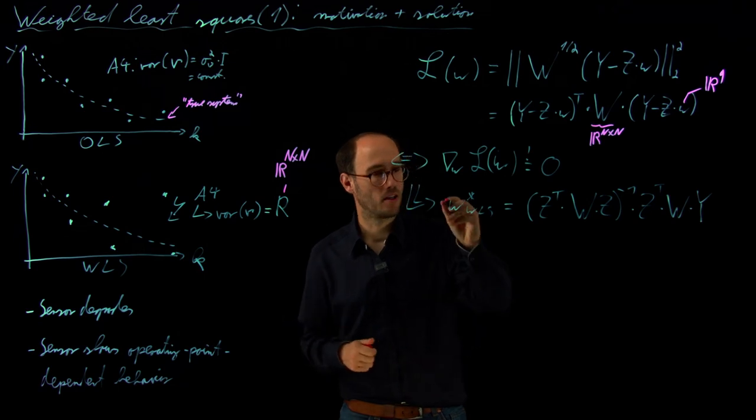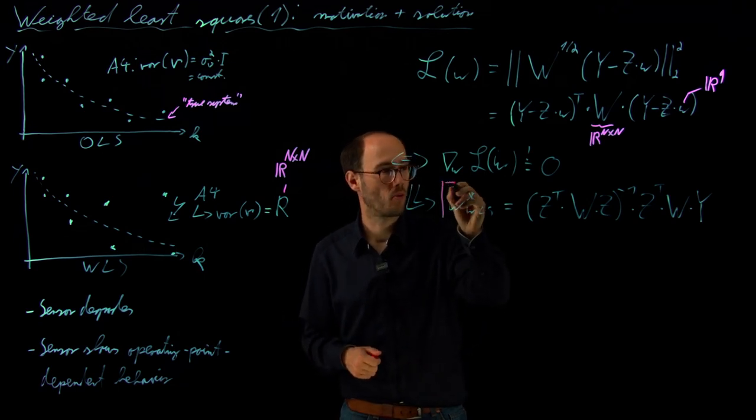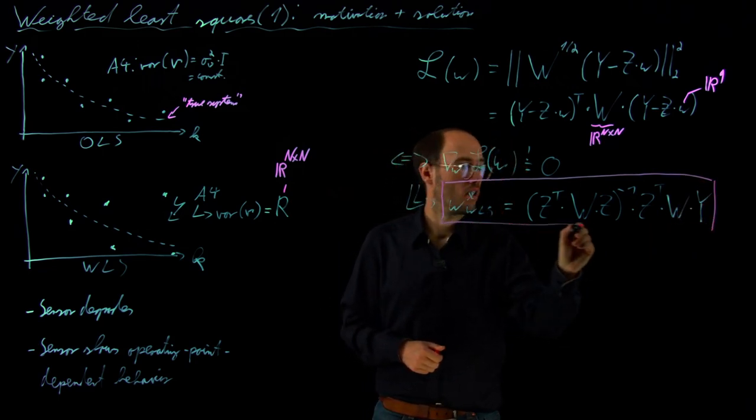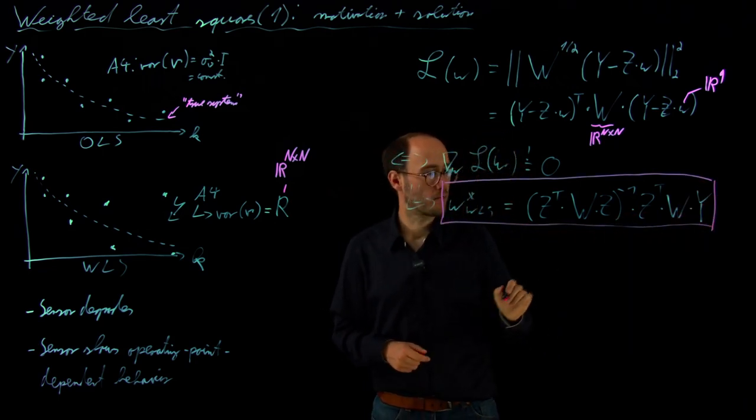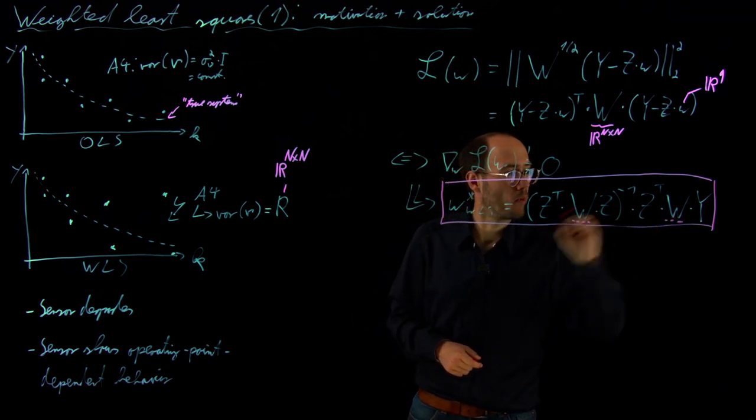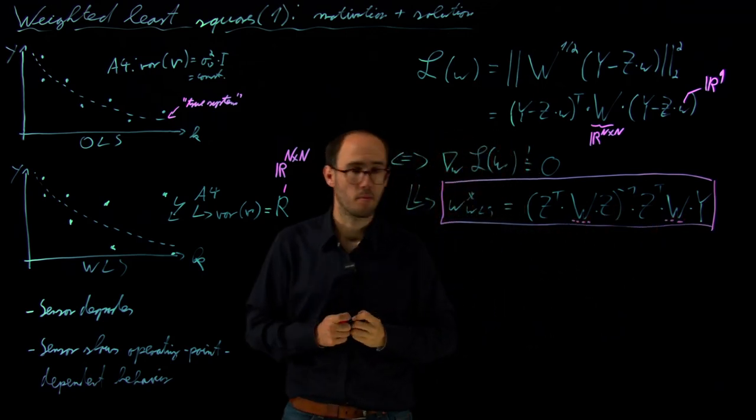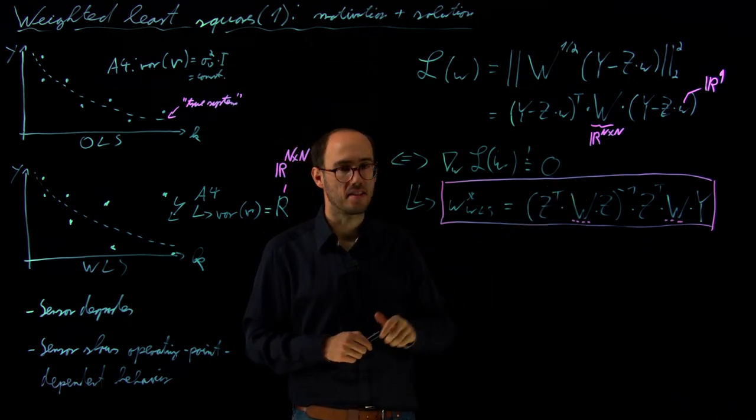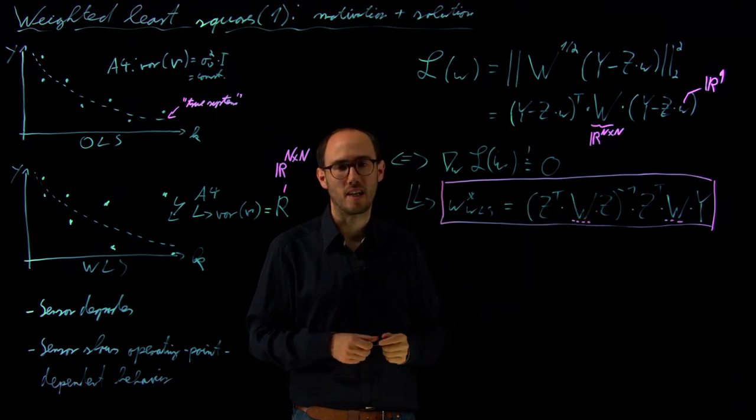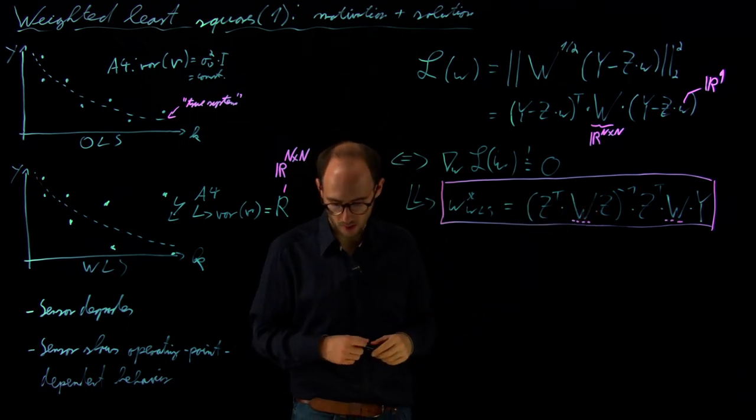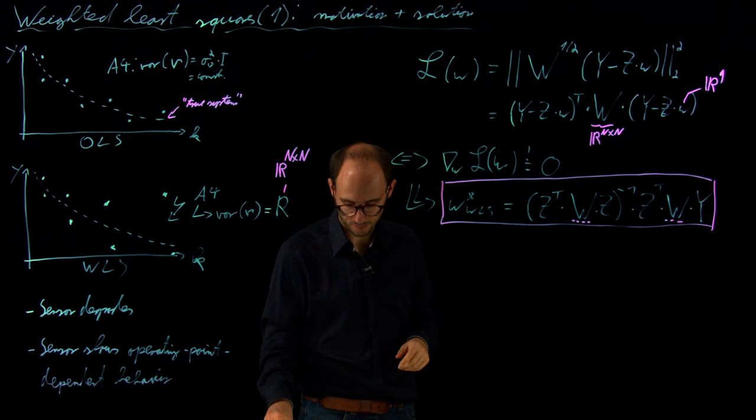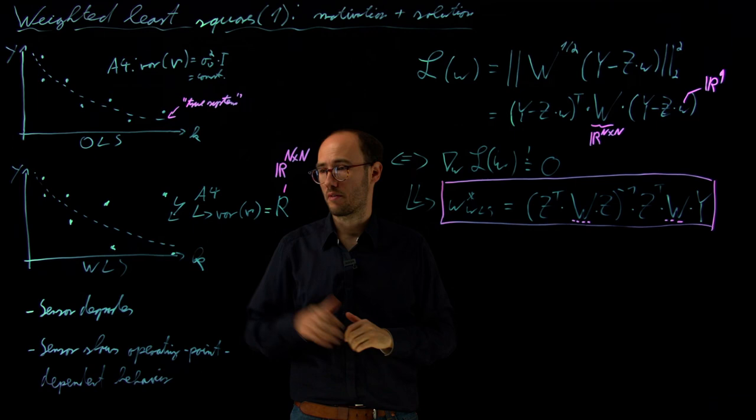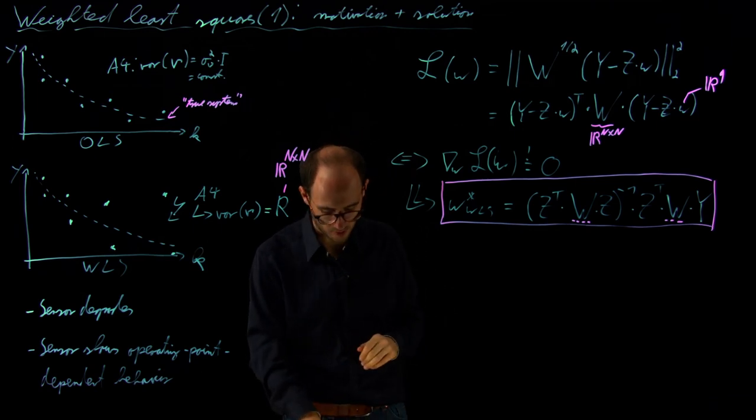Okay, so quite similar to our ordinary least squares solution. But the only new aspect are here our weighting matrices W, which come into the picture, and as a special case, if we would set W as the identity matrix, then of course we would come back to the ordinary least squares solution. And the interesting thing is now, why is that very helpful in order to solve this problem which I've sketched here?